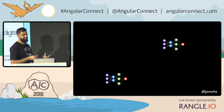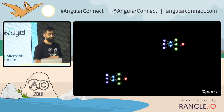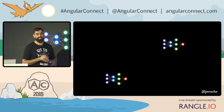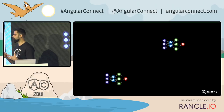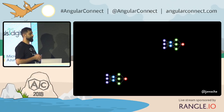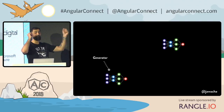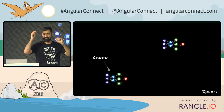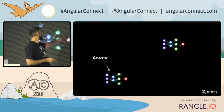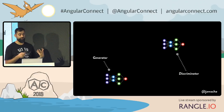It uses something called a generative adversarial neural network — a GAN. These are really, really exciting techniques. You have two neural networks competing with each other — adversarial. One is called the generator, the other is called the discriminator.